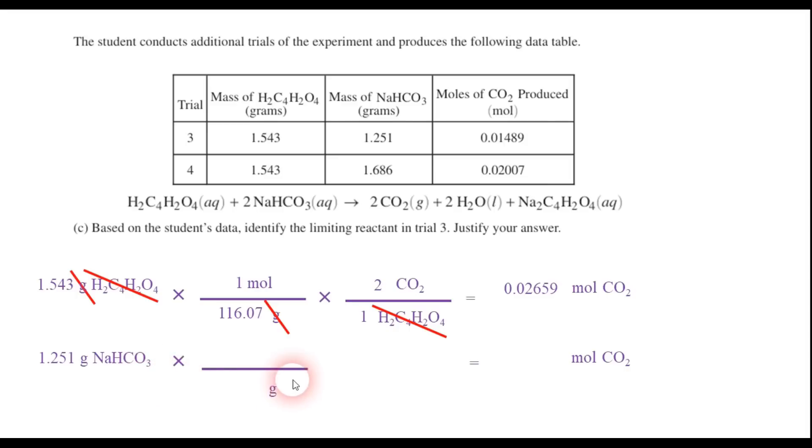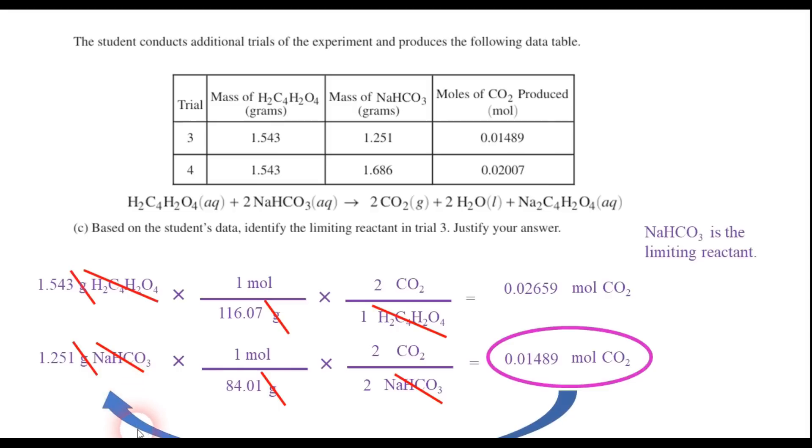So once again, step one is convert to moles. So grams on the bottom, moles on top. And if I add this up, it's about 84.01 grams in a mole of sodium bicarbonate. So grams are out. And in my second step, it's mole ratio again. So sodium bicarbonate on the bottom, carbon dioxide on top, because that's what I'm converting to. And in my balanced equation, this is a two to two ratio. Those are the coefficients for that. So sodium bicarbonate is out. If you want, you can cancel those twos as well. And when you divide, you find that we have 0.01489 moles of carbon dioxide. And take a look. That's exactly what was produced. So that tells me that this is the answer. And so the limiting reactant is the reactant that produced that smaller amount, which is sodium bicarbonate. So that tells me that the sodium bicarbonate is the limiting reactant in this process.